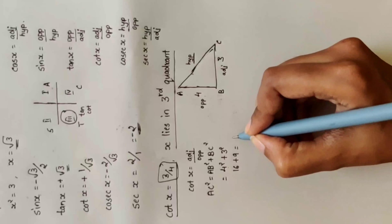Sec x = hypotenuse divided by adjacent = 5 divided by 3.